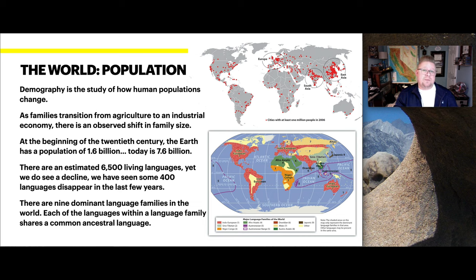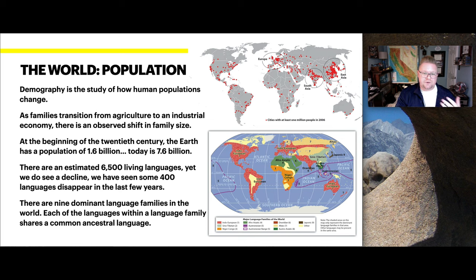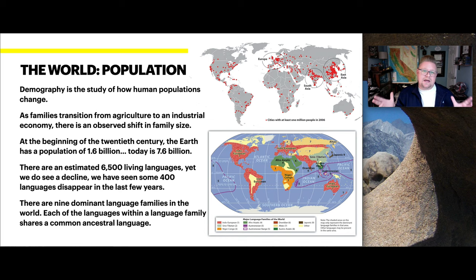There are an estimated 6,500 living languages, yet we do see a decline — some 400 languages have disappeared just in the past few years. There are nine dominant language families in the world, and each language within a family shares a common ancestral language. The top map here shows cities with at least 1 million people as of 2006, and the map below shows major language families including Indo-European and Niger-Congo, among others.